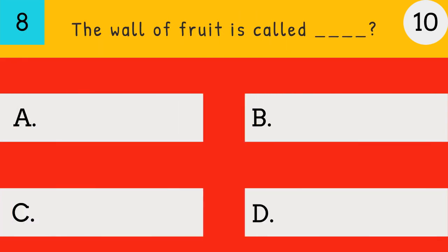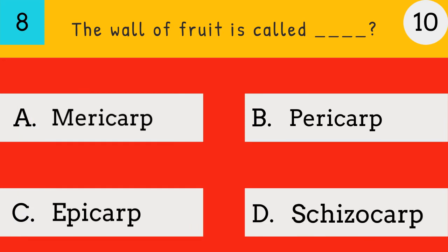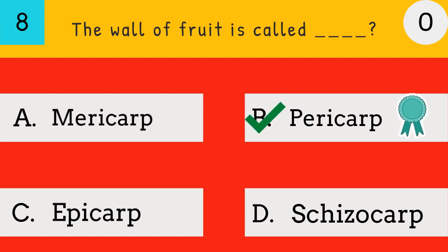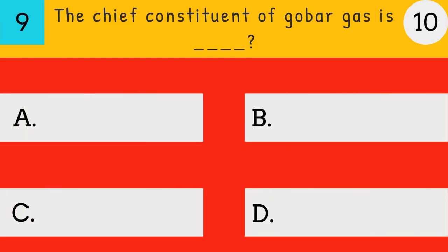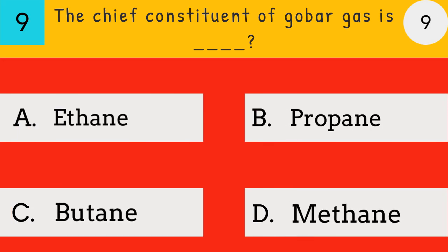The wall of fruit is called: Merikarp, Perikarp, Epikarp, Schizokarp. Answer: Perikarp. The chief constituent of gobar gas is Methane.